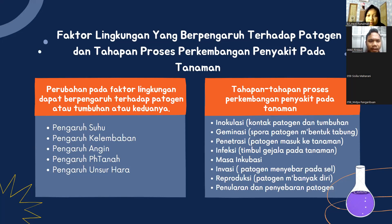Tahapan-tahapan proses perkembangan penyakit pada tanaman: inokulasi kontak patogen dan tumbuhan; germinasi spora patogen membentuk tabung; penetrasi patogen masuk ke tanaman; infeksi timbul gejala pada tanaman; masa inkubasi; invasi patogen menyebar pada sel; reproduksi patogen memperbanyak diri; serta penularan dan penyebaran patogen.